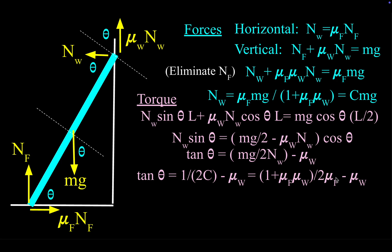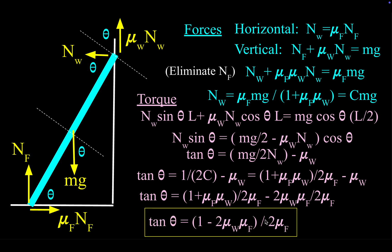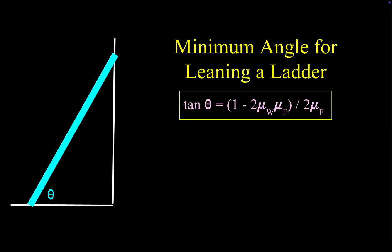Just to make it prettier, I'll get a common denominator on the two terms by multiplying mu_W by (2 · mu_F) / (2 · mu_F). With the common denominator of 2 · mu_F, we combine the numerator: (1 + mu_F · mu_W) minus 2 · mu_F · mu_W, which gives (1 - mu_F · mu_W). So the final expression is: tan(theta_min) = (1 - mu_F · mu_W) / (2 · mu_F). This is the minimum angle at which you can tip the ladder before it slides. Thanks for watching and I hope you found this helpful!